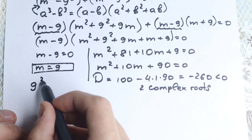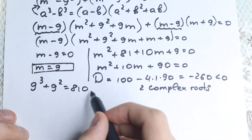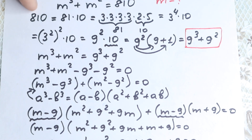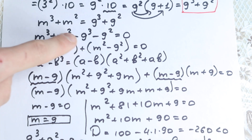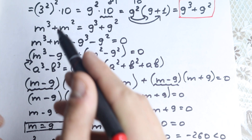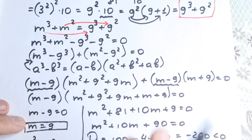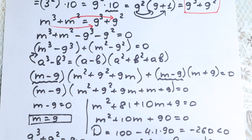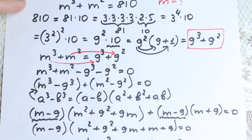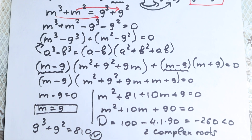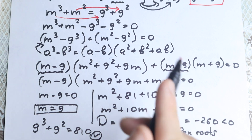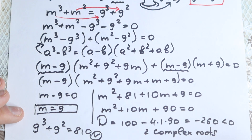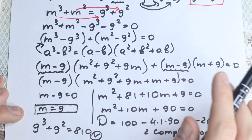Let's verify: 9 cubed plus 9 squared equals 810 — absolutely correct! As I showed earlier, we rewrote 810 as 9 cubed plus 9 squared, so m cubed equals 9 cubed and m squared equals 9 squared. This is the complete solution. In algebra, you can't just write m equals 9 in one or two lines and call it done — that's not a proper mathematical solution.